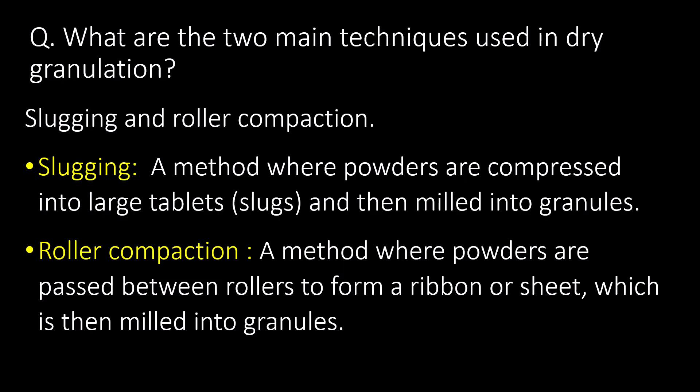What are the two main techniques used in dry granulation? Slugging and roller compaction are the two main techniques. Slugging is a method where powders are compressed into large tablets or slugs and then milled into granules. Roller compaction is a method where powders are passed between rollers to form a ribbon or sheet, which is then milled into granules.